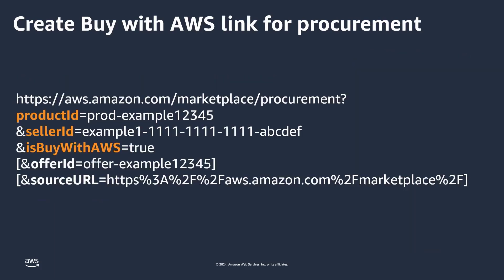Fifth, create and add a Buy with AWS procurement link using the URL provided, replacing the example values with your information. You can include or omit the optional fields, offer ID and source URL. Note that the parameters are case-sensitive.